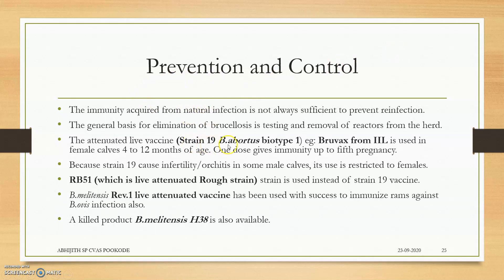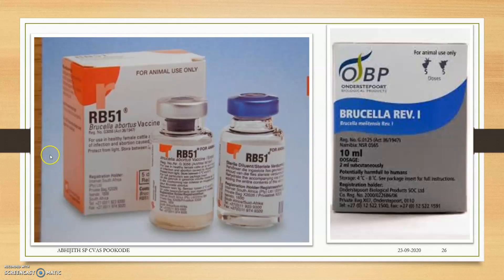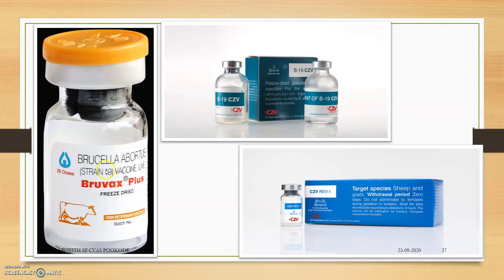Vaccines: Strain 19 is a live attenuated vaccine — Brucella abortus variety of Indian Immunologicals — one dose gives immunity up to 5 years. RB51 is a live attenuated rough strain vaccine used instead of Strain 19. Strain 19 vaccine should not be used in pregnant animals — a very important point.